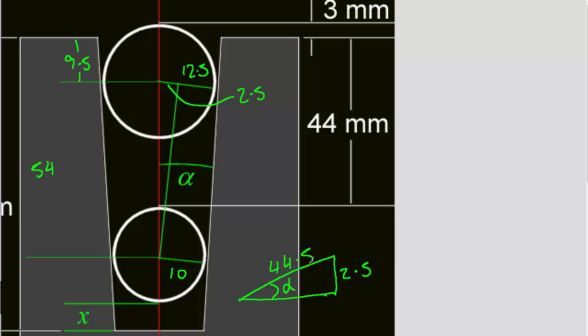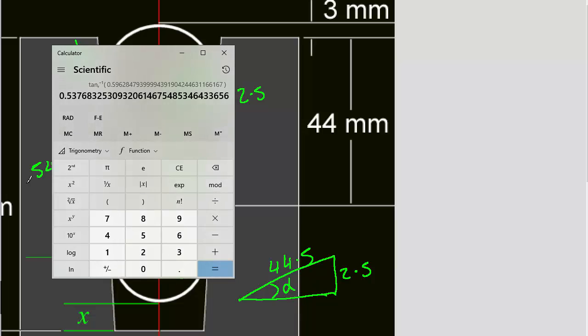So alpha is going to be the arc sine of 2.5 over 44.5. So let's get the calculator. We want this answer in degrees, so we'll change that to degrees, and we'll clear that answer.